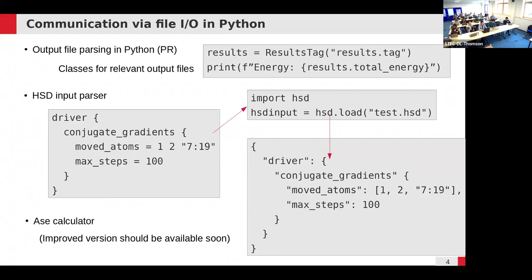There will be an even higher abstraction level — something like an ASE calculator but independent of ASE — where you just say 'here are the results in that directory, please find the total energy there,' and it would know where DFTB+ stores it and give you that value. Our goal is that you don't even need to know which files DFTB+ creates; you only need to know which property you want. On top of that, there will also be an ASE calculator.